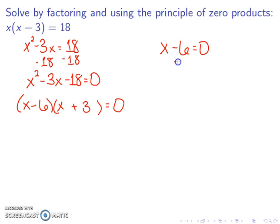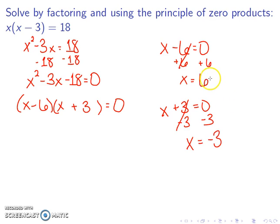So I have x minus 6 equal to 0. Adding 6 to both sides gives me x equals 6. I also have x plus 3 equal to 0, and subtracting 3 from both sides gives x equals negative 3. So the answer is 6 and negative 3.